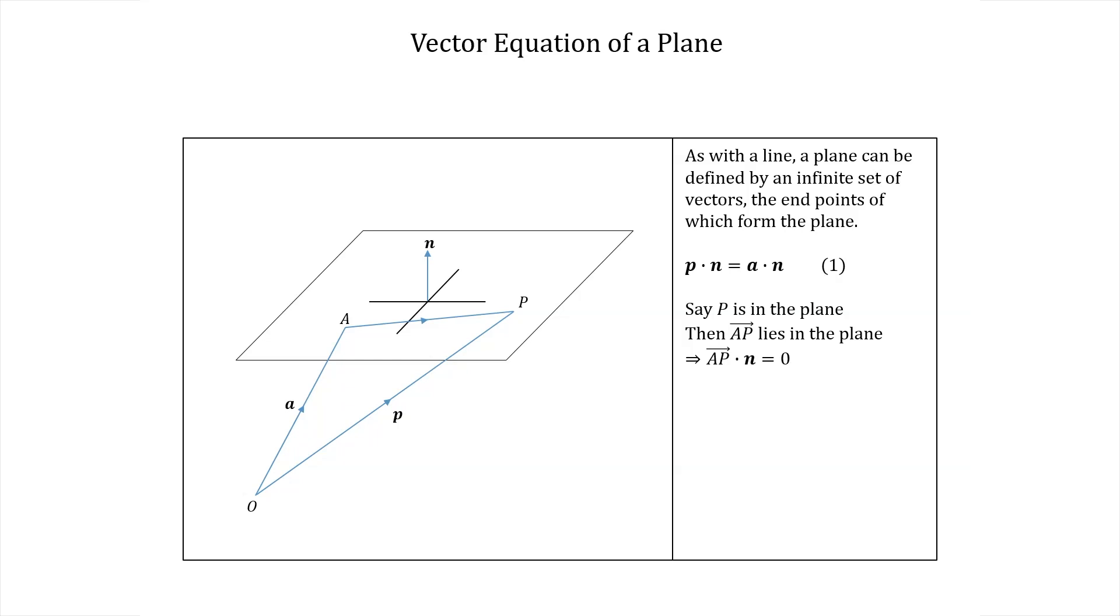But what is ap? Well, we can get from point a to point p by first moving in the opposite direction to vector a and then along vector p in the same direction as vector p. So ap is in fact equal to -a + p.